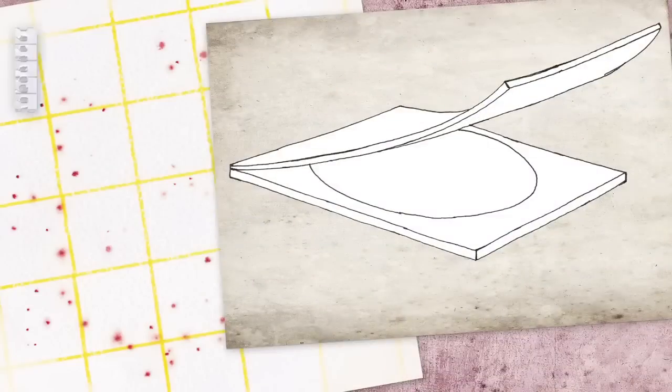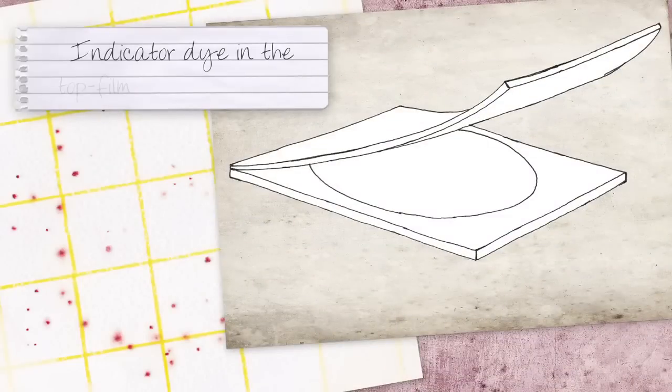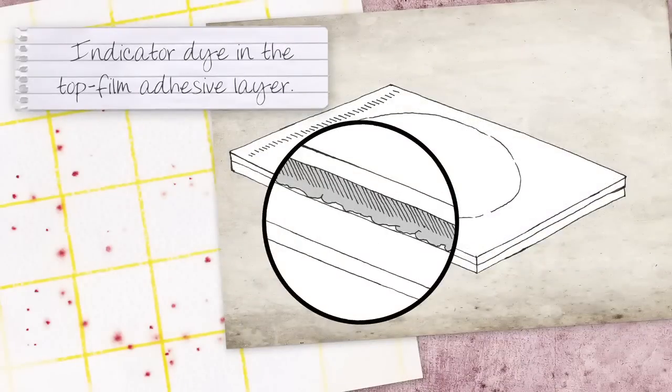With Petrifilm plates, the dye was ingeniously placed in the adhesive layer. This allowed the colonies to first grow strong before the dye diffused through the adhesive and gel layers to reach them.